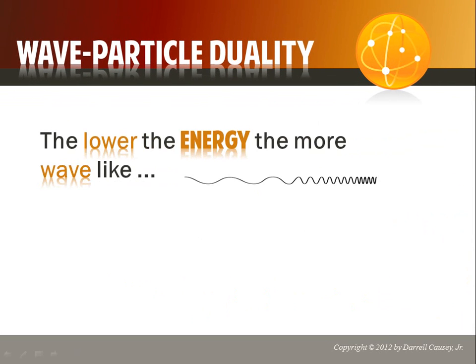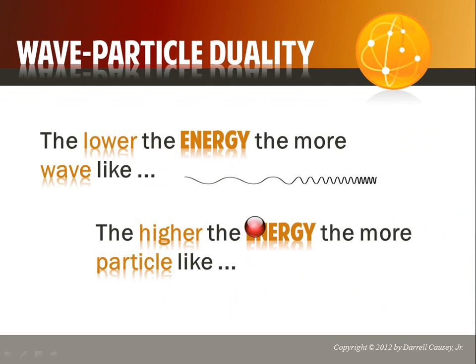Wave-particle duality: the lower the energy, the more wave-like, and the higher the energy, the more particle-like. When you have wavelengths like radio waves and microwaves, they're low in energy and have very long wavelengths and behave like waves. But higher energy forms like x-rays and ultraviolet light cause them to act more like particles. So photons, depending on their energy, have this wave-like or particle-like description.